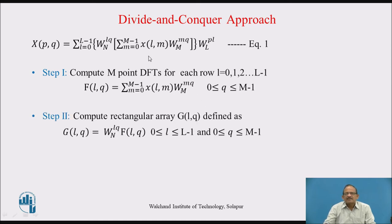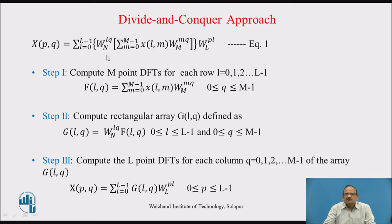In the second step, we multiply the result by the twiddle factor W_N^(lq). We represent this as G(l, q) = W_N^(lq) · F(l, q), for l = 0 to L−1. Basically, in this step we are multiplying each of these values by the twiddle factor W_N^(lq).